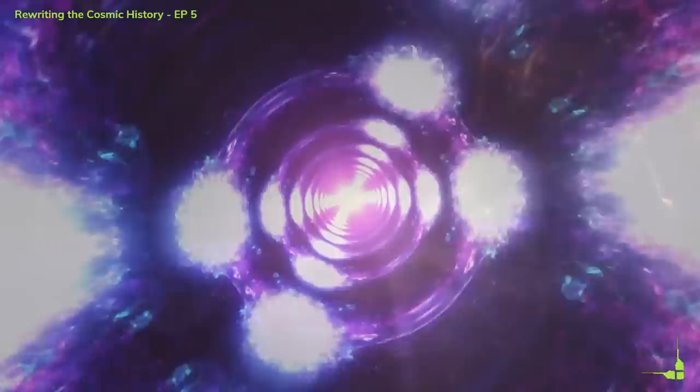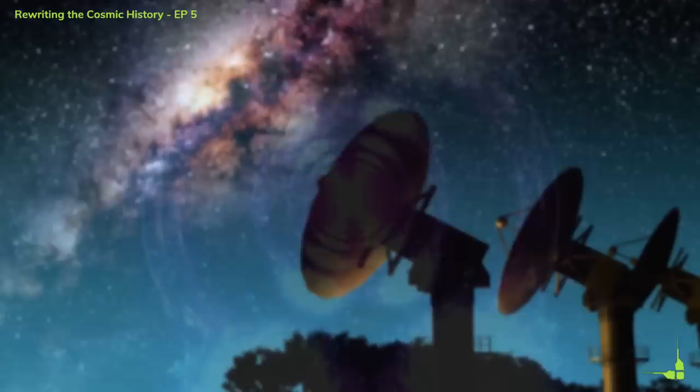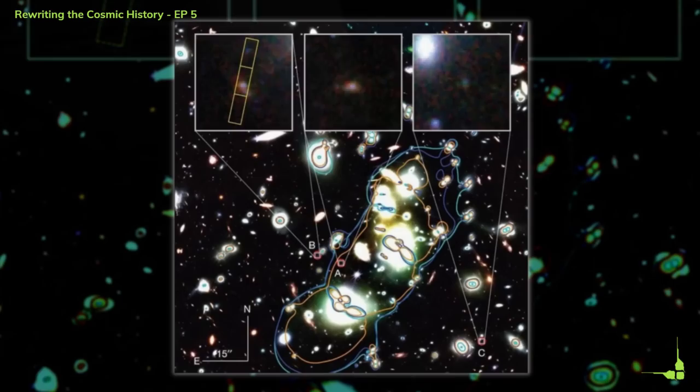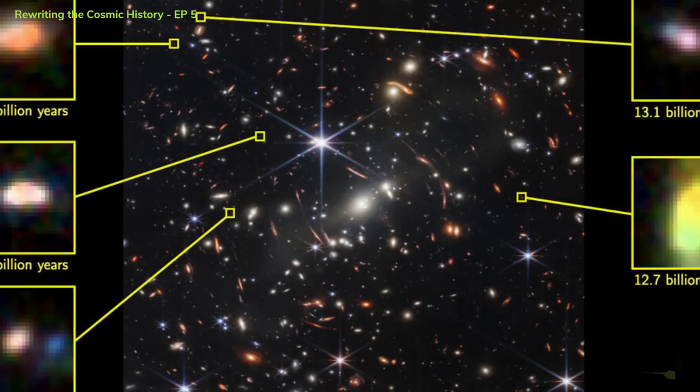However, finding quasars in the very distant past is not easy, because their light has been stretched by the expansion of space into longer wavelengths that are beyond the reach of most telescopes. This is why astronomers were eagerly anticipating the launch of the James Webb Space Telescope, as its exceptional infrared capabilities are perfectly suited for studying distant quasars and galaxies.